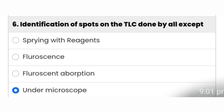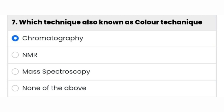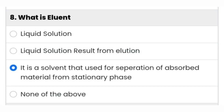The next question: identification of spots on TLC is done by all methods except under the microscope. The seventh question: which technique is also known as the color technique? It is chromatography — the first option is the right answer.